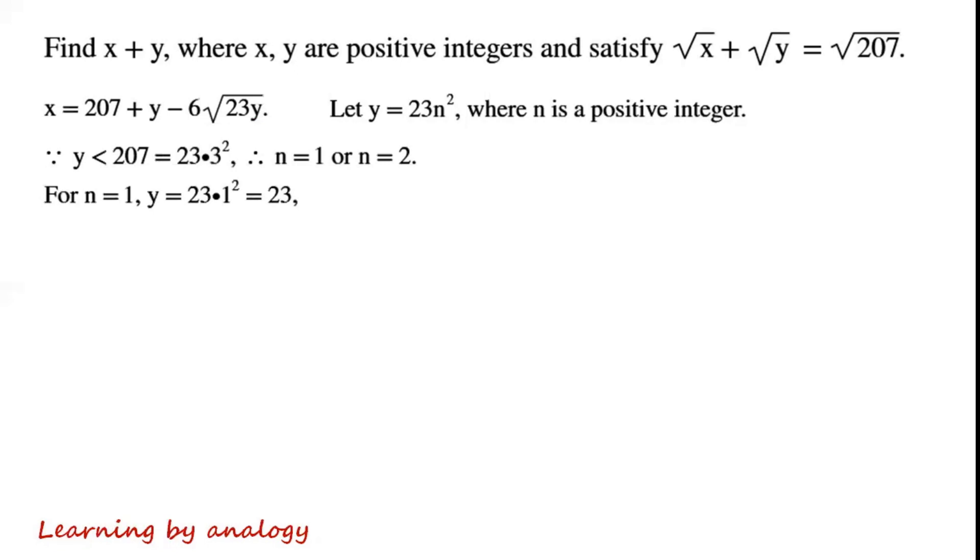For n equals 1, y equals 23 times 1² which is 23. x equals 207 plus 23 minus 6√(23 times 23) equals 92. So x plus y equals 92 plus 23 equals 115.